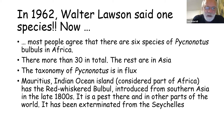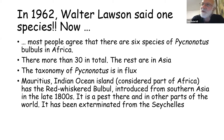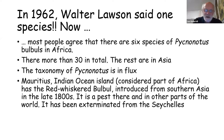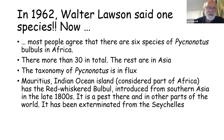There is one introduced species: Mauritius, one of the African islands, has a bird called the Red-whiskered Bulbul. It was introduced there in the 1800s and also introduced on the Seychelles, but was exterminated there. It's been introduced in various parts of the world and it's a pest wherever it's been introduced.